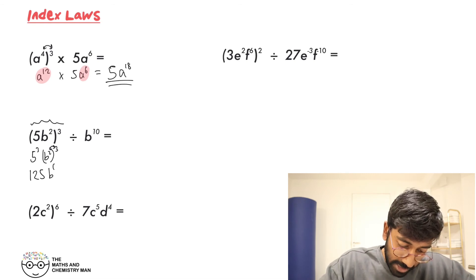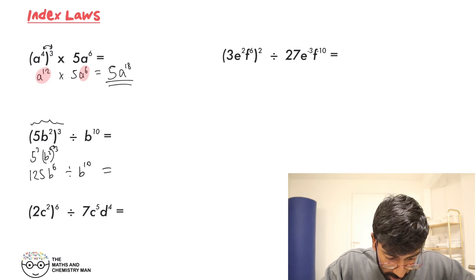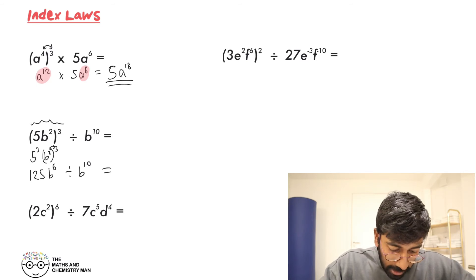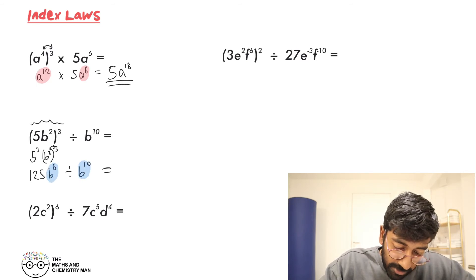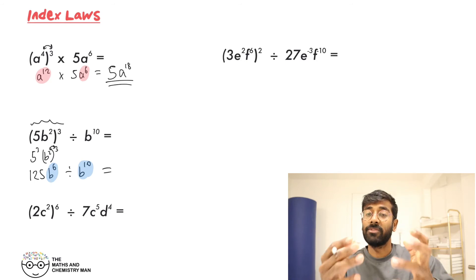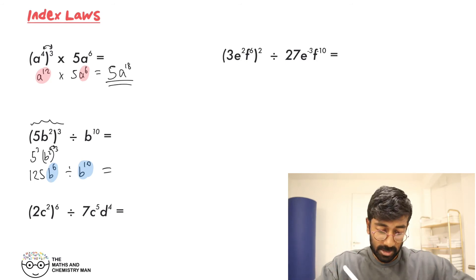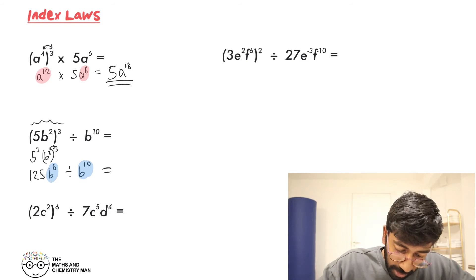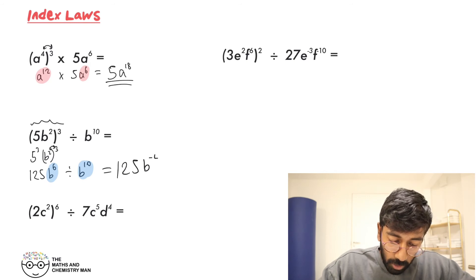Then the B: you've got your brackets, your powers — times them together — B to the power of 6. And then divide by B to the power of 10. When dividing, subtract the powers: that gives 125 and then B to the power of minus 4, because 6 take away 10 is minus 4.